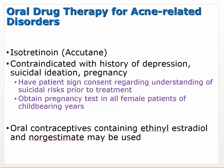For oral therapy, isotretinoin (Accutane) is taken orally and is contraindicated with a history of depression. It was found that suicidal thoughts increased with its use. It is also contraindicated in pregnancy — pregnancy category X. The patient has to sign a consent regarding understanding of suicidal risks prior to treatment, and a pregnancy test must be obtained in all female patients of childbearing age.